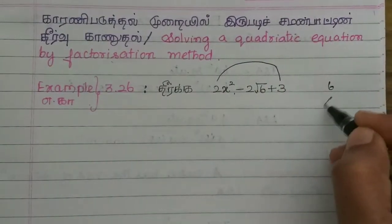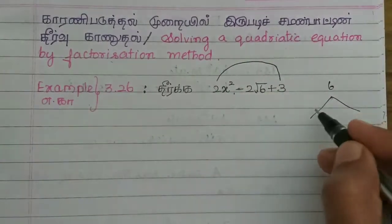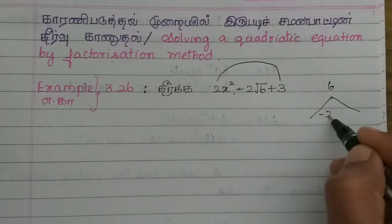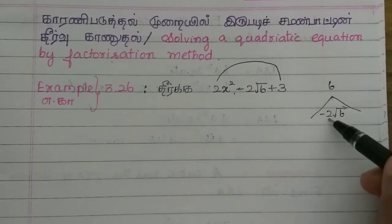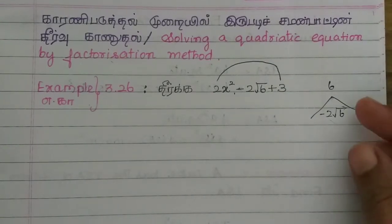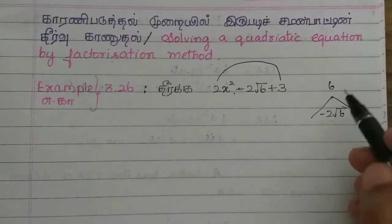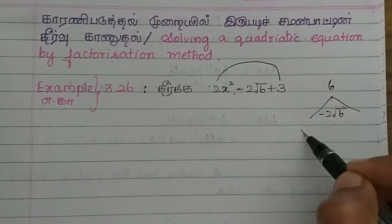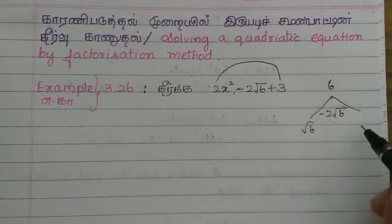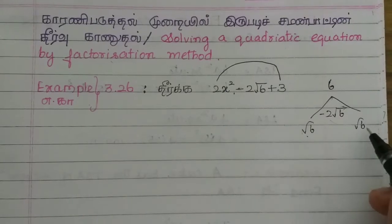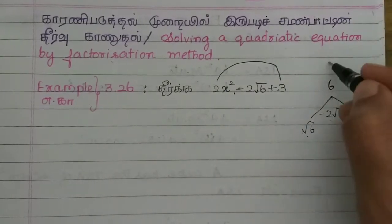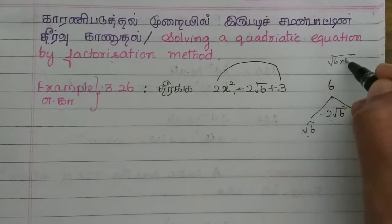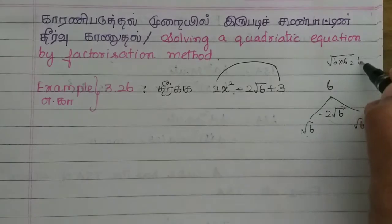Let's go. There is minus 2√6. Now, if there is root 6, it will take root 6. How do we need root 6? Root 6 into root 6 is 6. Root 2 cancels. Root 6 into root 6 is the root of 6 into 6. The root of 6 is 6.